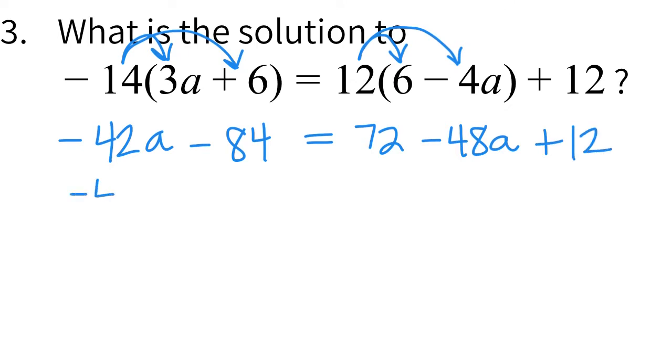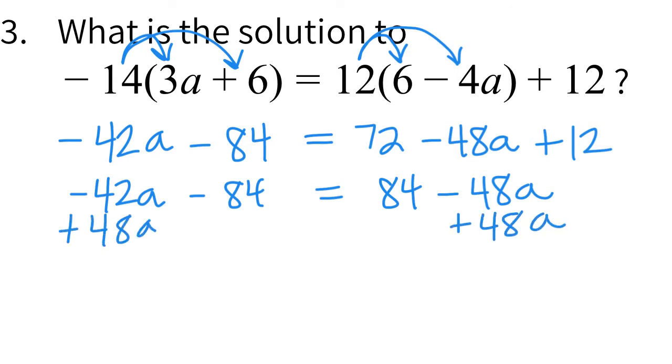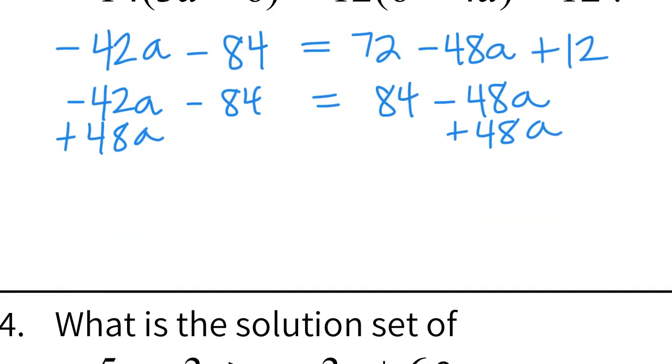On the left side that's going to stay the same for right now. But on the right side I have two numbers that I can combine. So 72 plus 12 gives me 84. And then I still have my minus 48a. I have a's on both sides of the equal sign. So I want to move it to where it's only on one side. So I'm going to add 48a to both sides. Which leaves me with 6a minus 84 equals 84. And that cancels.